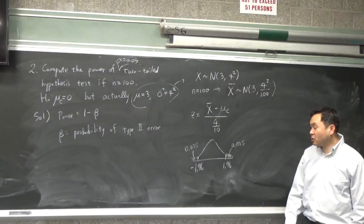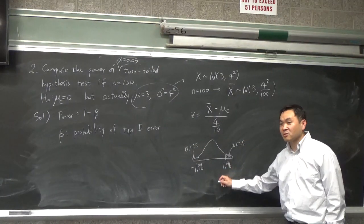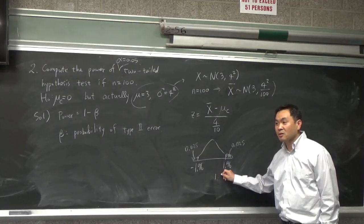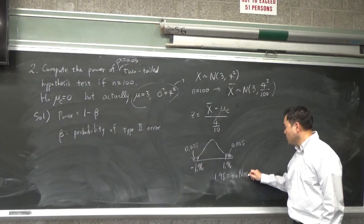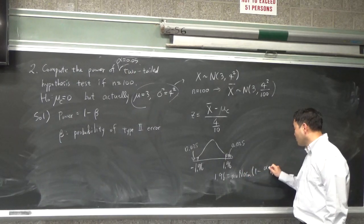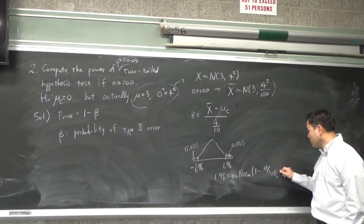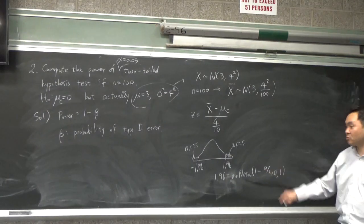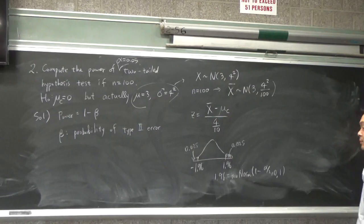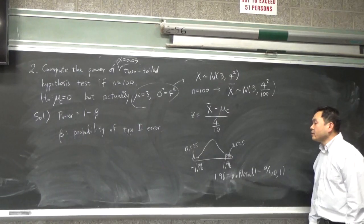Now if you're wondering where I get 1.96, how do you get 1.96? Inverse norm. It's an inverse norm of 1 minus alpha over 2, 0.1. And the reason we do alpha over 2 is because we have a two-tailed test. So that's what we get.